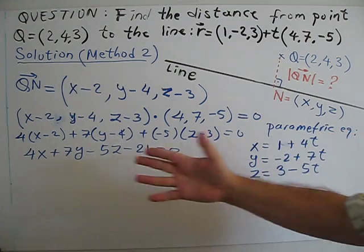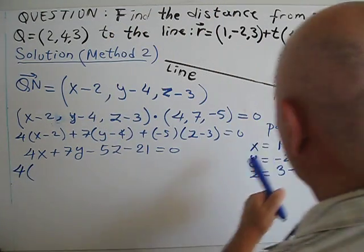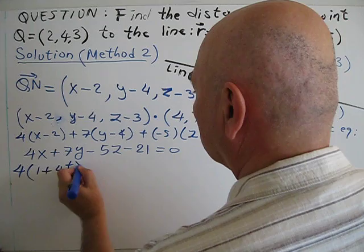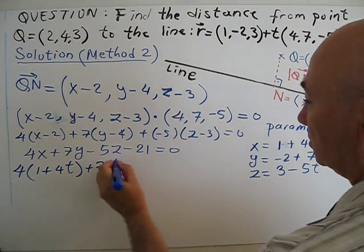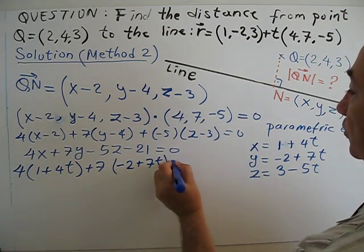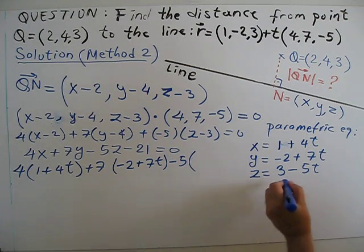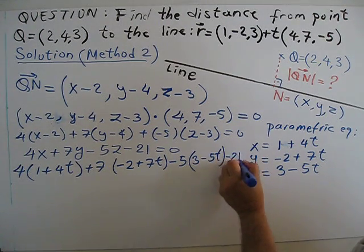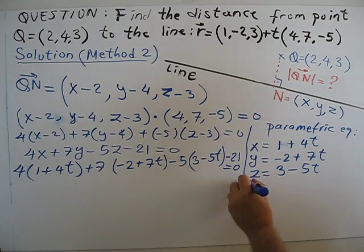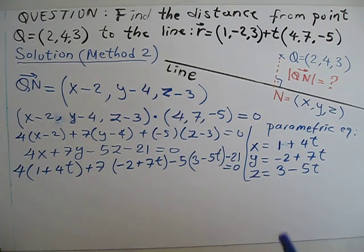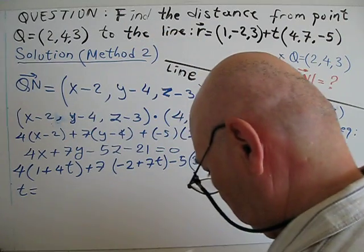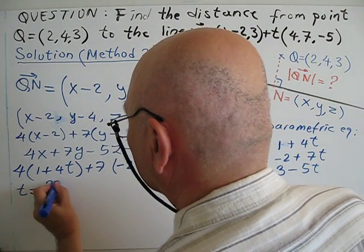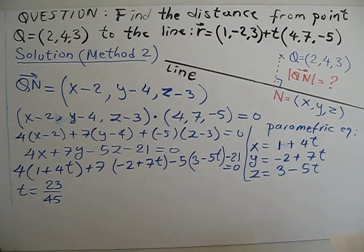So basically: 4 times (1 plus 4t), plus 7 times (minus 2 plus 7t), minus 5 times (3 minus 5t), minus 21 equals 0. If I expand this and isolate t, I get t equal to 23 over 45. So how do I get x, y, z? I just substitute this value into the parametric equations.